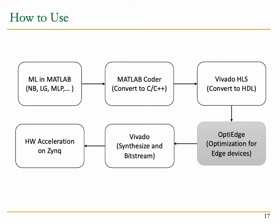This slide illustrates how we implement the malware detectors in hardware followed by our proposed optimization method. The MATLAB tool exports the machine learning models in C language. Programmers can use the MATLAB Coder tool to generate hardware-specific C source code for each ML-based malware detector model. The C files are used as input to the HLS tool to generate hardware — that is, converted to Verilog code. The HLS reports are then used as input to OptiEdge to perform design space exploration.